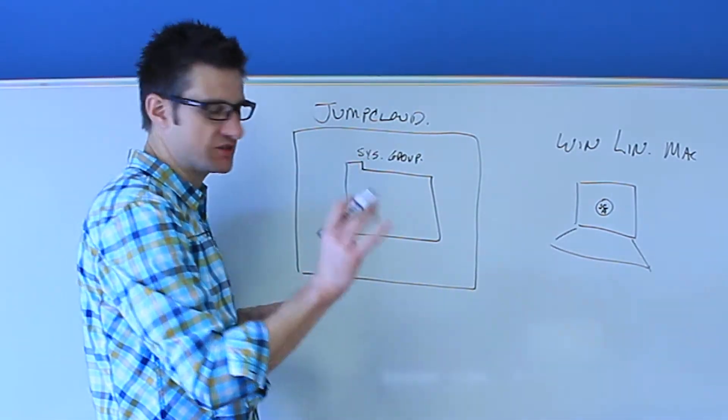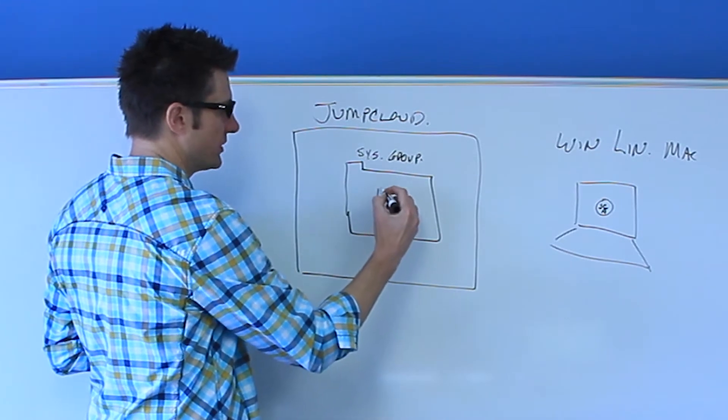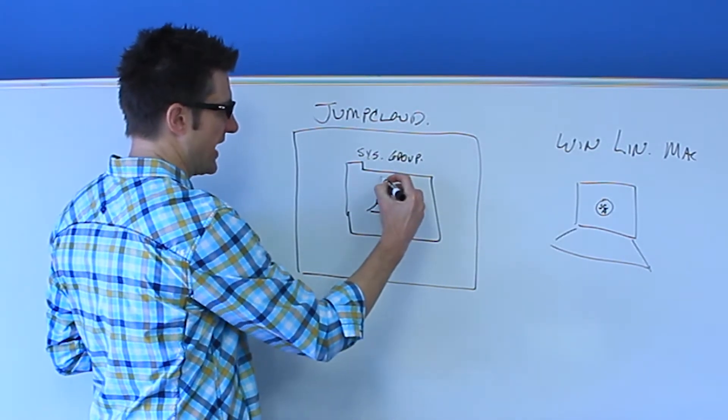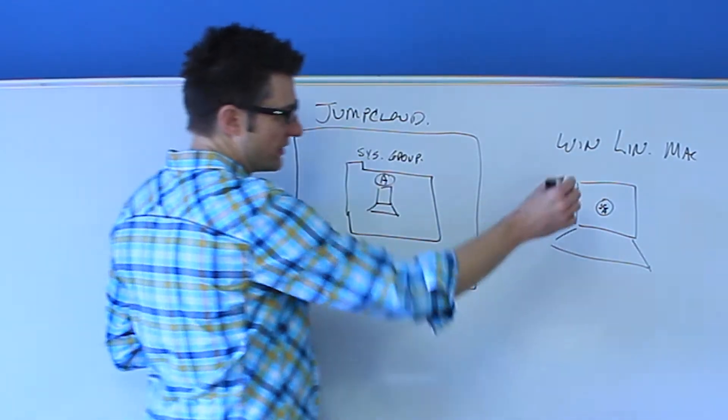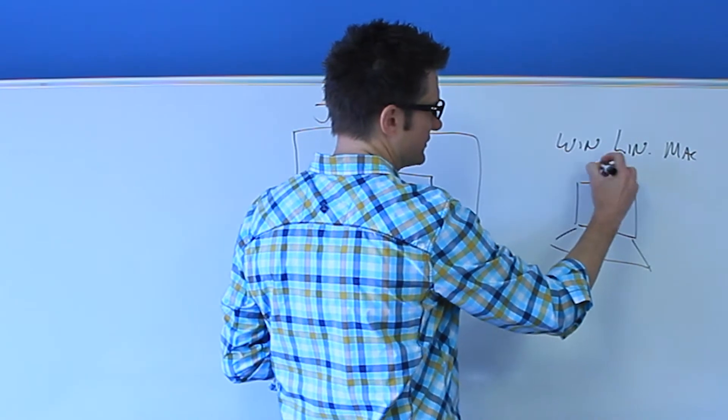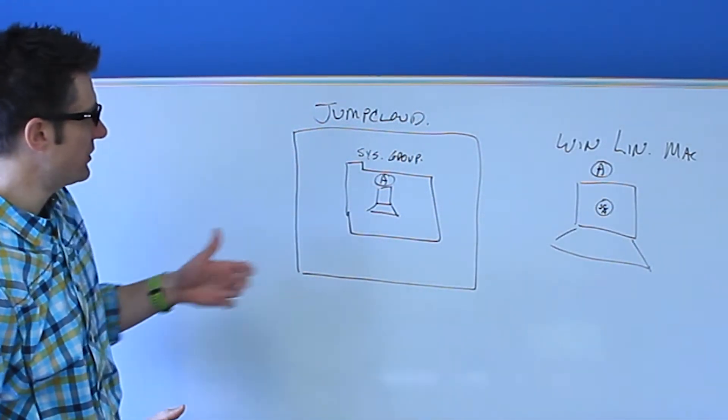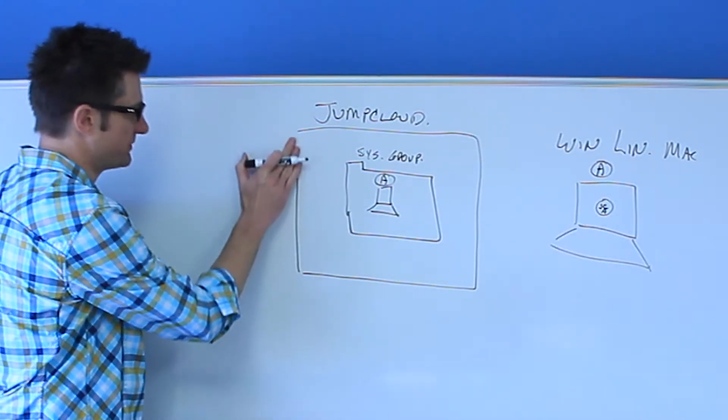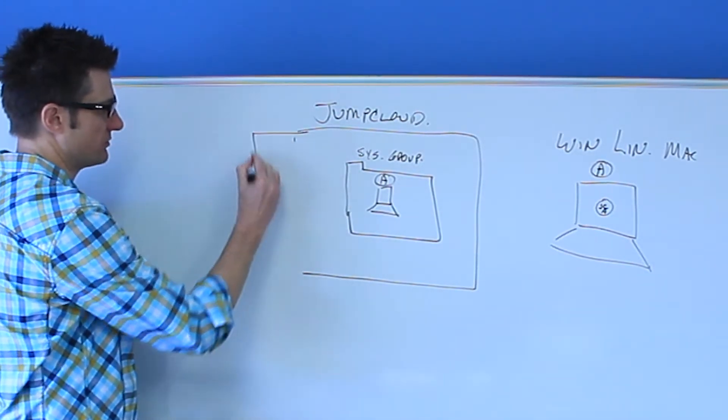In this very simple model, inside the system group, we will create one system. We'll call the system A. Out here in the real world, the actual system itself, this is also system A. So now you have the system group created. Inside of JumpCloud, let's expand this a little bit, give ourselves some more room. You will create policies.